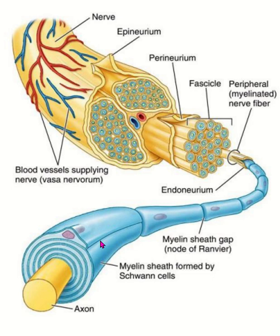Each Schwann cell myelinates a small segment of the axon, and there is a gap present between two myelination sheaths formed by the Schwann cell. This particular gap where the nerve fiber is exposed is known as the node of Ranvier, which contains a large number of sodium and potassium channels.